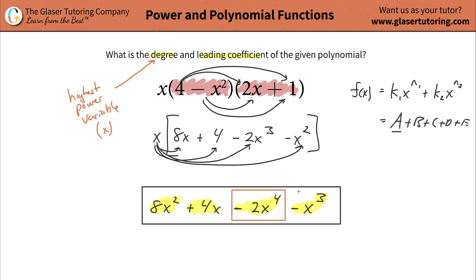So the highest power here is going to be to the fourth power. And therefore, the degree of the polynomial is going to be the fourth degree. Or degree four, whatever you want to say it.